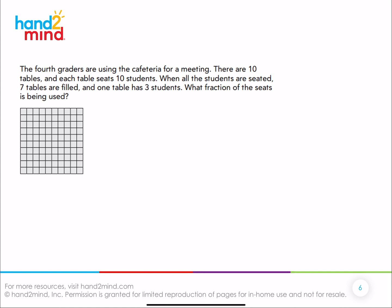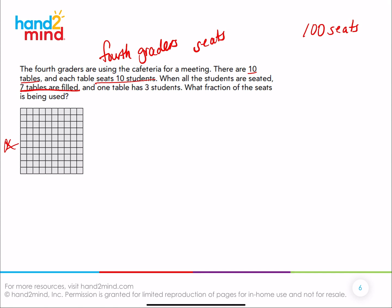Let's look at another one. The fourth graders are using the cafeteria for a meeting. There are ten tables and each table seats ten students. When all the students are seated, seven tables are filled and one table has three students. What fraction of the seats are being used? It's about fourth graders and their cafeteria seats. There are ten tables with ten seats each, so a hundred seats total. We know seven of the tables are filled — so we fill seven rods representing seven tables: one, two, three, four, five, six, seven.